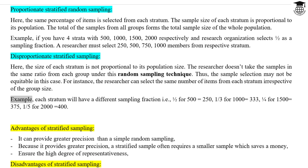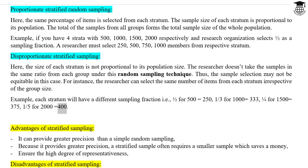Example: each stratum will have a different sampling fraction — one-half for 500 equals 250, one-third for 1000 equals 333, one-fourth for 1500 equals 375, and one-fifth for 2000 equals 400.